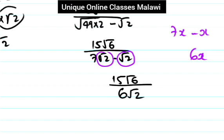This is what we are going to do. We have 15, 6, and we simplify. 15 divided by 6: the GCF of 15 and 6 is 3. So 15 divided by 3 is 5, and 6 divided by 3 is 2.